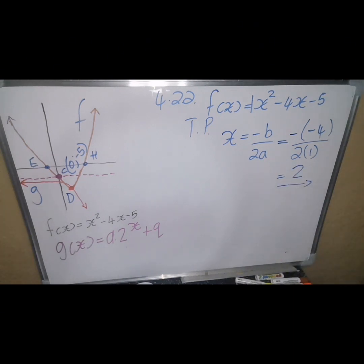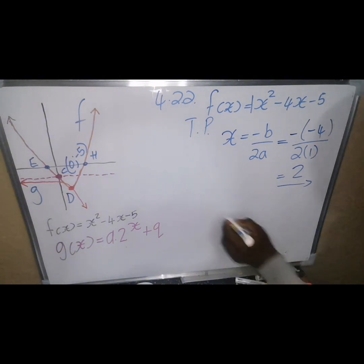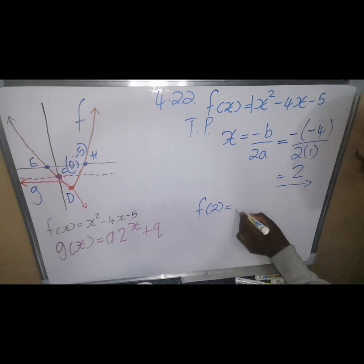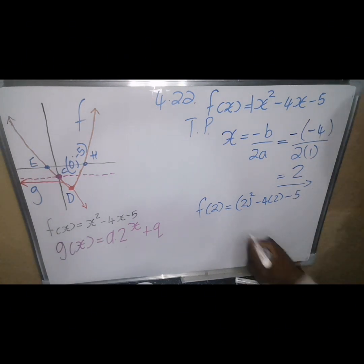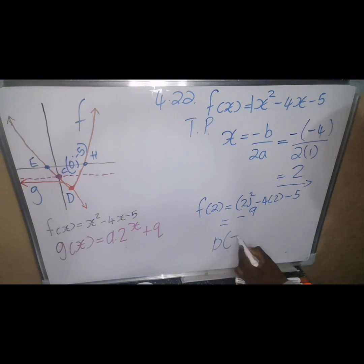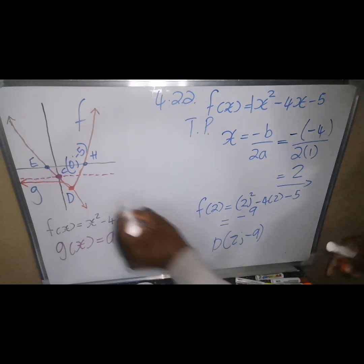Substituting x = 2 back into f: f(2) = 2² − 4(2) − 5 = 4 − 8 − 5 = −9. Therefore the coordinates of D are (2, −9).